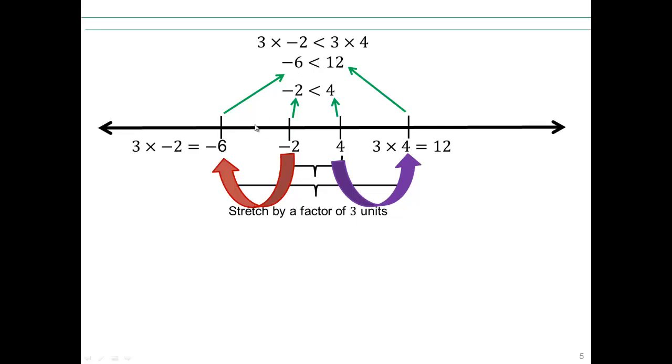In fact, negative 6 is much, much smaller than 12, than negative 2 and 4. So you can see that the inequality is still preserved when you multiply both sides by the number 3.